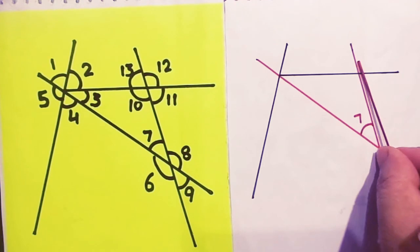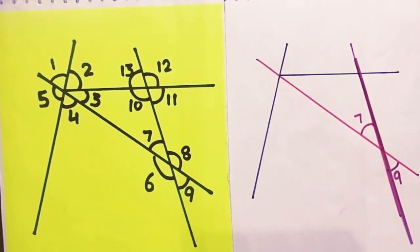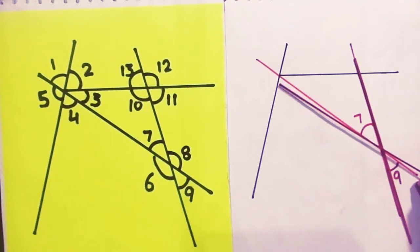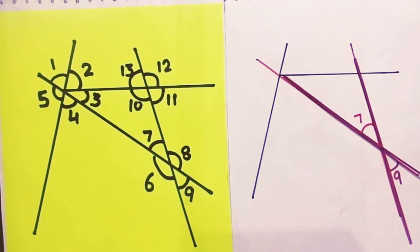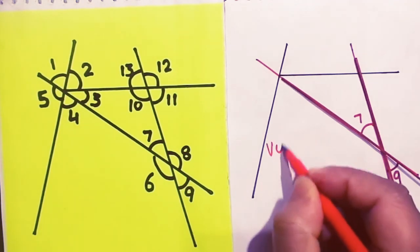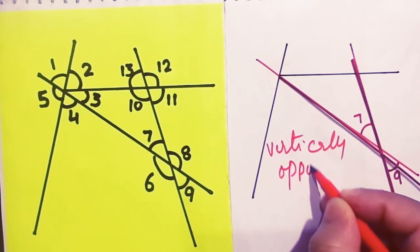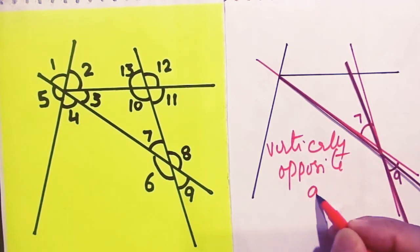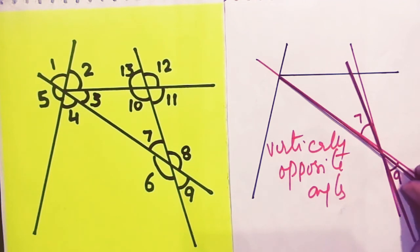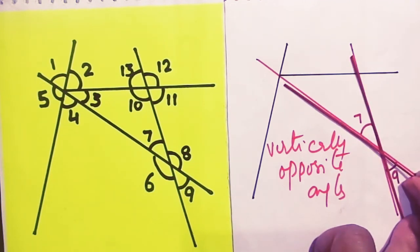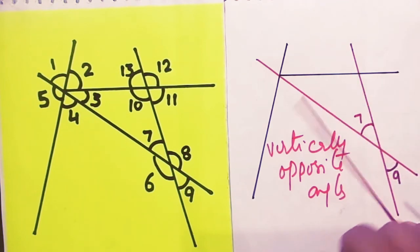Angles 7 and 9 are very easy because these are the angles made by intersecting two straight lines. Hence, they are known as vertically opposite angles.